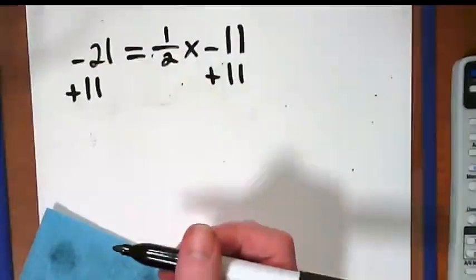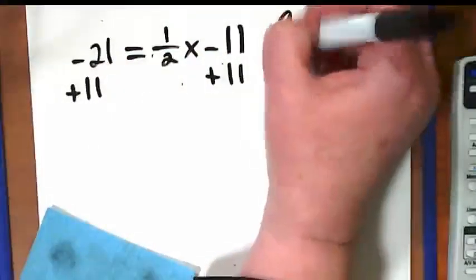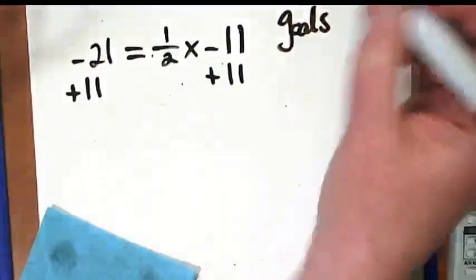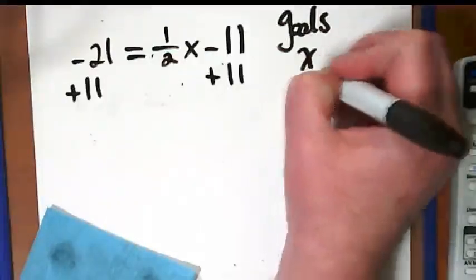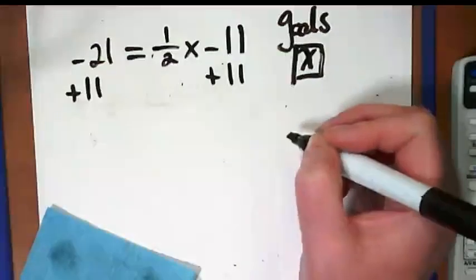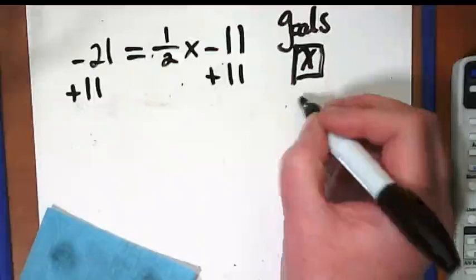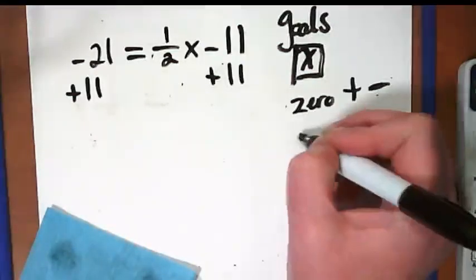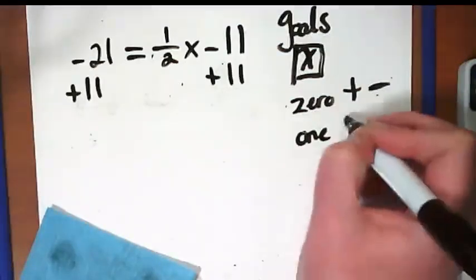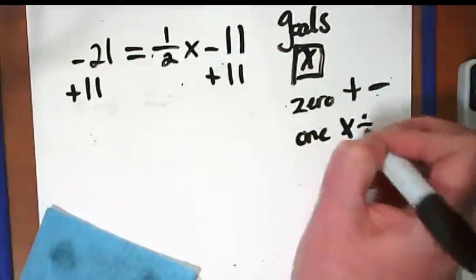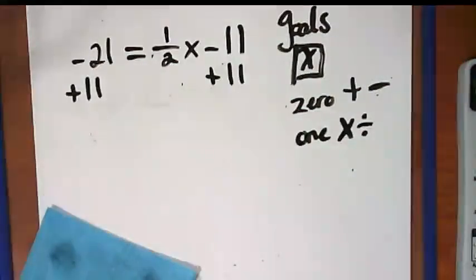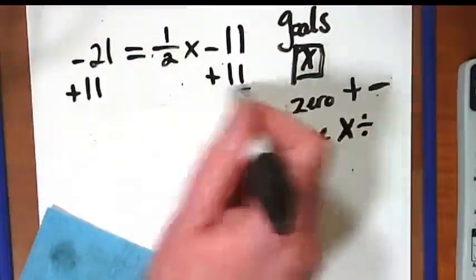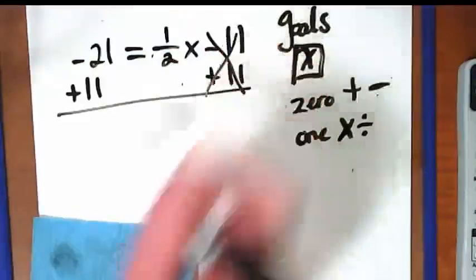Why? What's the two goals we have? Well, really, we've got three goals. The ultimate goal is to get X by itself, right? But to do that, we're looking at can we make a zero by adding or subtracting? Can we make a one by multiplying or dividing? Remember how we've been talking about that the last few days? This is going to make a zero.